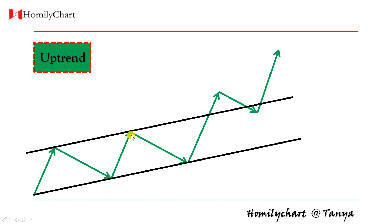We see when price hits the upper line it turns downwards, hits the lower line and turns upwards. But if we find the price has broken through the upper line and the next low is not on this line, that means this ascending channel is not effective anymore.